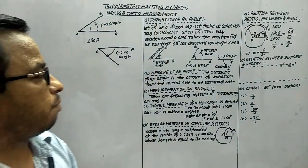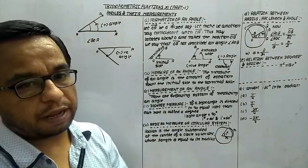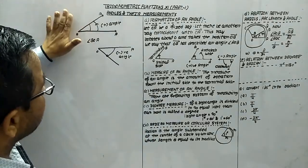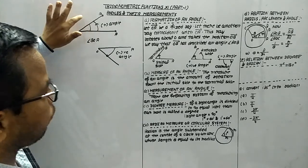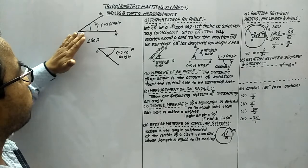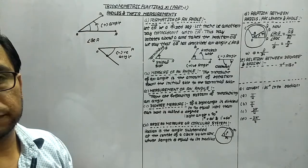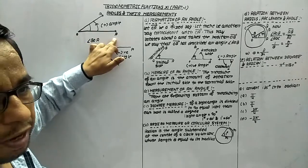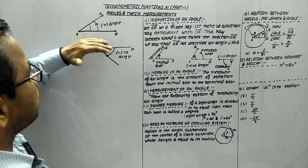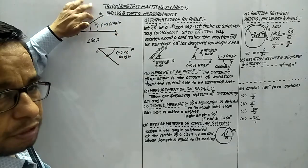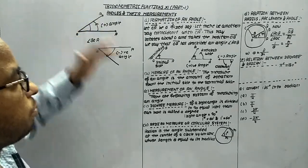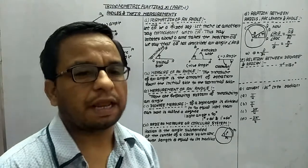Now, measurement of angle. Measure of an angle means whatever amount of rotation is taken, that is known as the measurement of the angle. This is the fixed ray, and the moving ray OB rotates to a position. Then the amount of rotation is known as the measure of an angle.